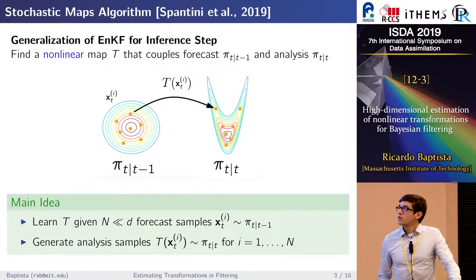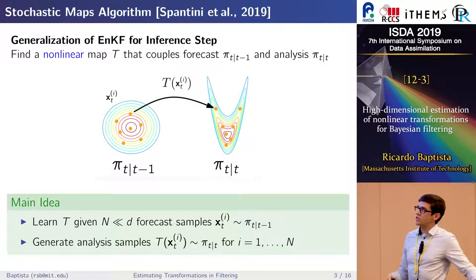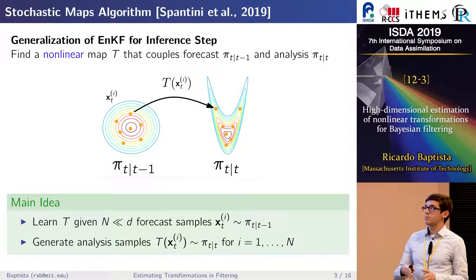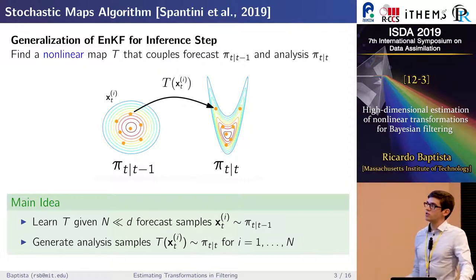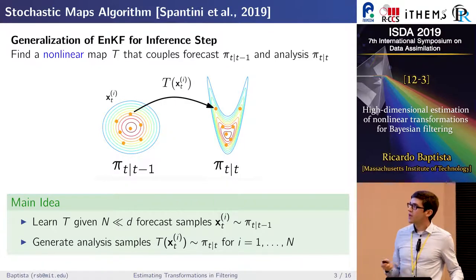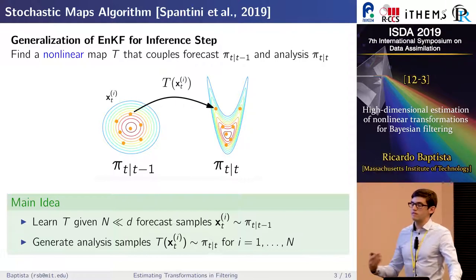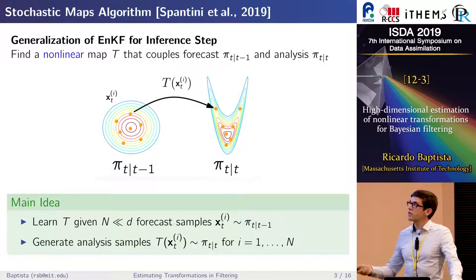Most results are based on ensemble Kalman filters, but they are inconsistent in capturing posterior distributions primarily because they find a linear transformation at every assimilation step — a Bayesian inference problem from forecast to analysis — applying it to every forecast particle to get analysis samples. One way to get closer to posterior consistency is to instead look for nonlinear maps, which we apply to our forecast to get analysis ensembles.